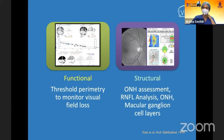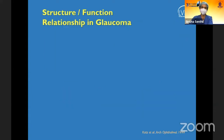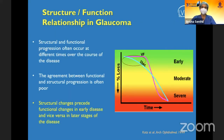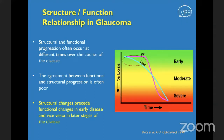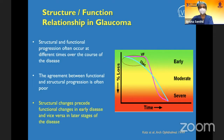Structural assessment can be done by clinical evaluation of the optic disc and stereo photographs, but this is subjective. Trained observers can pick up changes, but untrained ones may not, and it is not quantitative. Structural assessment with OCT is therefore very important. In glaucoma, structural changes precede functional changes in early disease and vice versa later in the disease.